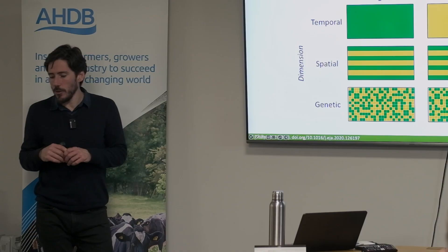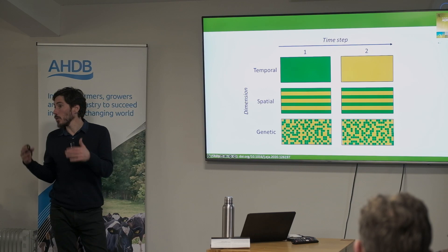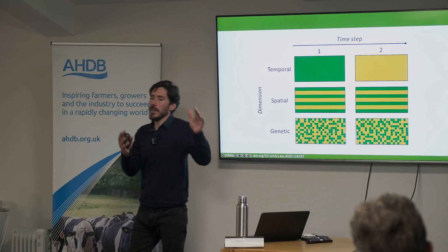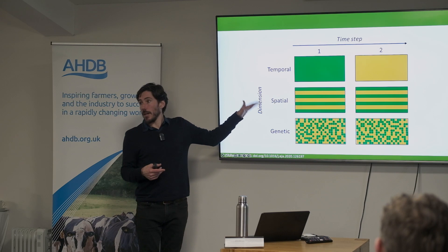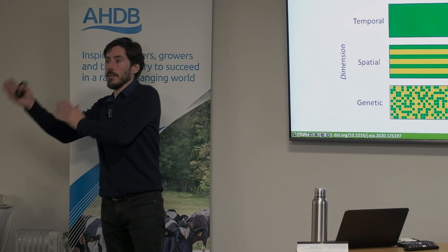Using diversity to manage pests and disease has three dimensions. One is temporal — diversity through time — which is simply rotation. We may have a monoculture, but we're moving it through a rotation over time, bringing in diversity of what grows in that field over time.